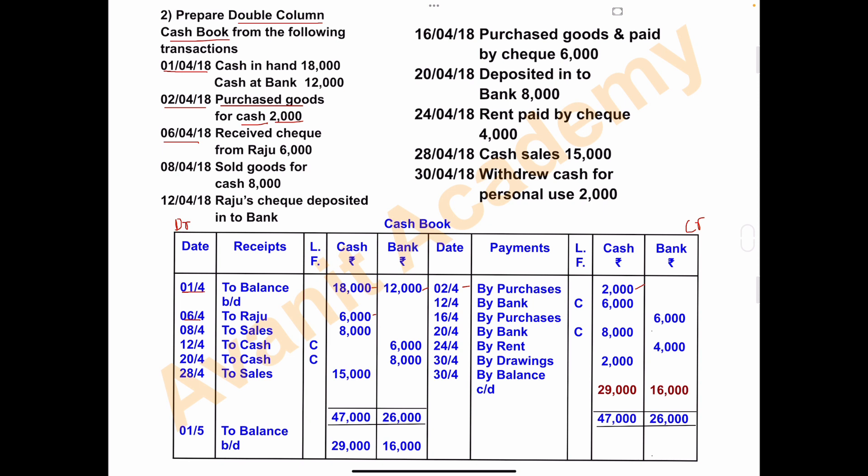On 8th April 2018, goods were sold for cash rupees 8,000. Selling of goods generates revenue or income for the business — goods go out and cash comes in. Sales is considered revenue, so we record it on the receipt side. Write 8th April, 'to sales', and record 8,000 in the cash column.